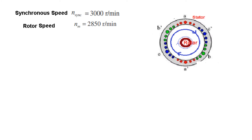We know what synchronous speed is — we have already learned this earlier, but let me repeat. If you see this diagram, this is the stator, and when we give three-phase supply to the stator, it produces a rotating magnetic field. The speed of this rotating magnetic field is called synchronous speed, or N-sync. The rotor will also follow the synchronous speed of the stator magnetic field, and the speed of the rotor is called N-m, the rotor speed or mechanical speed.